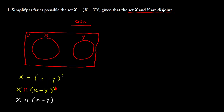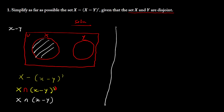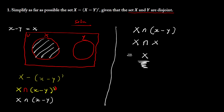Now using the Venn diagram, let's understand what X minus Y is. Since X and Y are disjoint sets, when we remove Y from X, Y has no overlap with X, so X minus Y is simply X. This means the expression becomes X intersection X, and X intersection X is simply X. So our final answer is X.